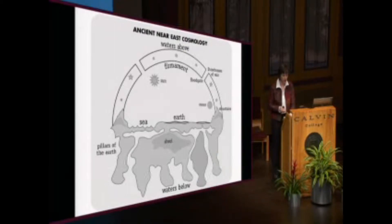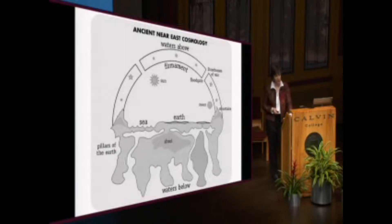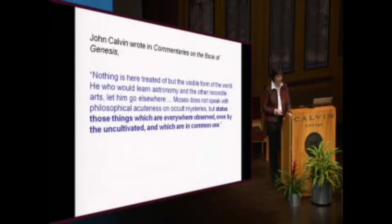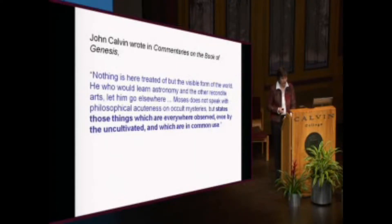When God inspired Genesis 1, he accommodated his message to the people's understanding of the physical world. He didn't even try to explain to them that the earth was spherical and the sky was actually a gaseous atmosphere. This idea of accommodation was actually suggested well before modern science. In 1563, John Calvin wrote in his commentaries on Genesis that Genesis states those things which are everywhere observed, even by the uncultivated, and which are in common use. God revealed himself in terms that everyday people could understand — which is a comforting thought.